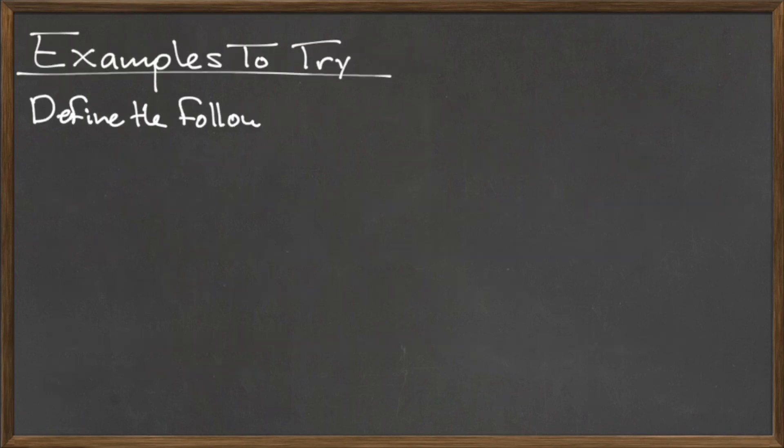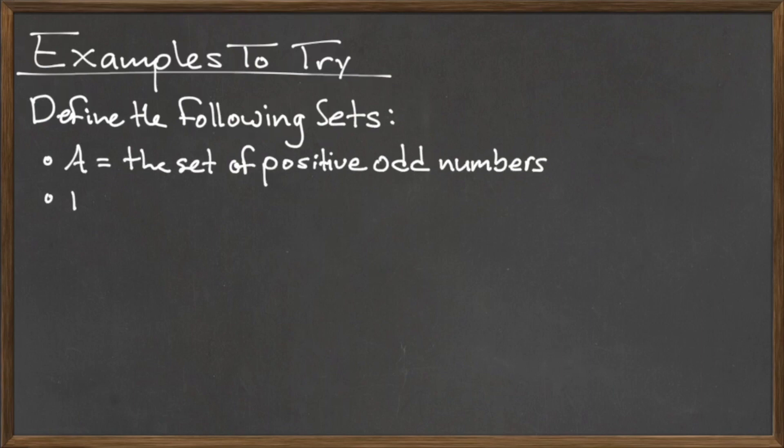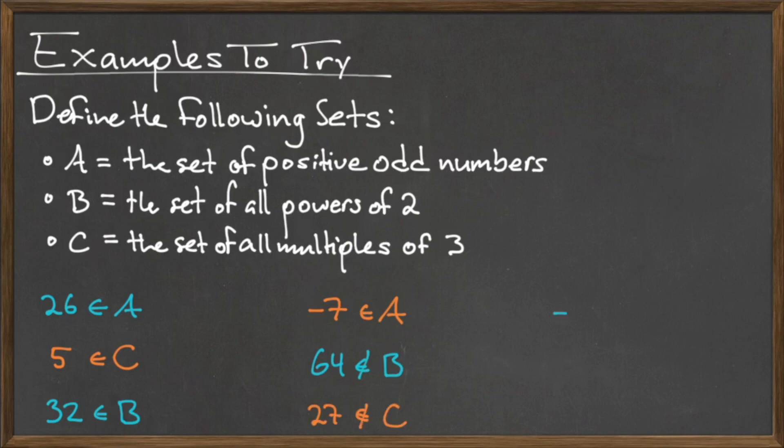To get some additional practice with membership and set notation, try the following examples. First, define the following three sets. Let A be the set of all positive odd numbers. Let B be the set of all powers of 2. And let C be the set of all multiples of 3. Write each of these three sets using the capital letter given and the roster form notation, and then determine if the following membership statements are true or false.